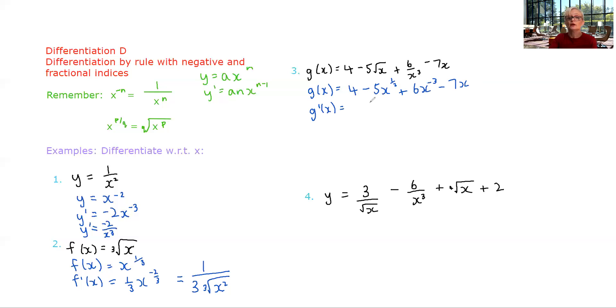So we're going to get negative five times a half. So negative five on two, x to the, what's a half minus one? It is negative a half. Then we're going to get plus six times negative three. So minus 18 x to the, decrease that by one. And then we should know by now that the derivative of negative seven x is negative seven. So that bit's easy.